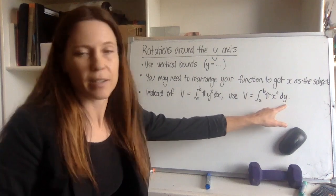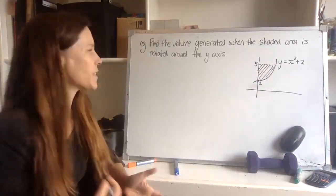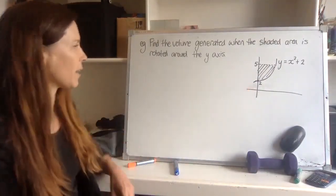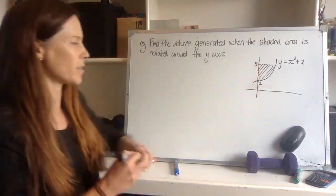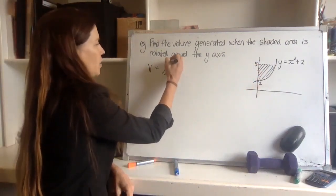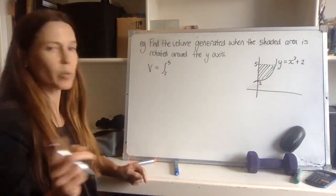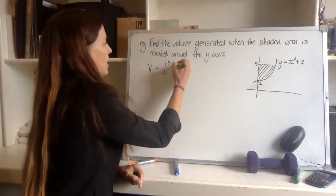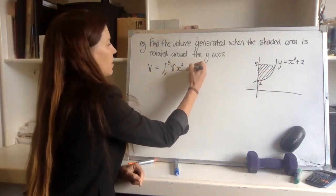And now for an example, we need to rotate this area around the y-axis. So start with your formula, you need bounds of 2 and 5, and then instead of pi y squared dx, we need pi x squared dy.